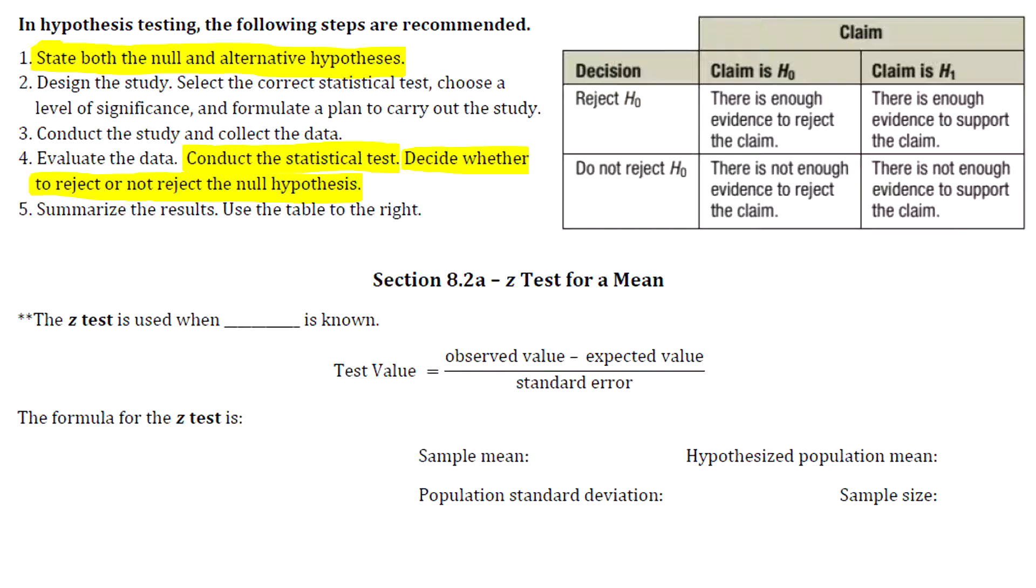Step five is really important. Step five is to summarize the results. With every single hypothesis test that we do, we're going to end it by making a summary statement. We're going to use this table over here to the right for every single problem.